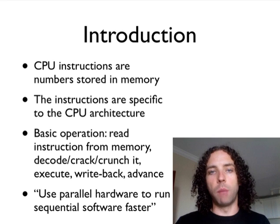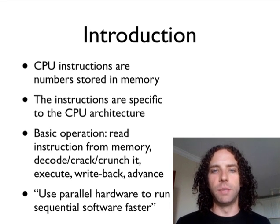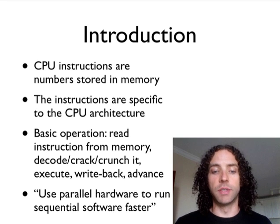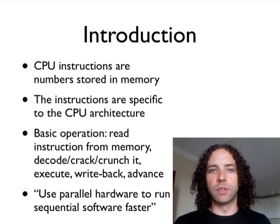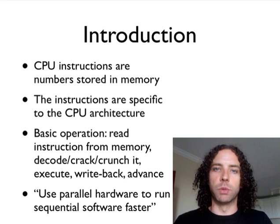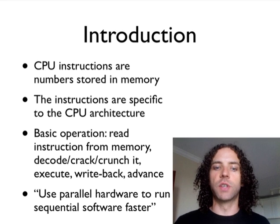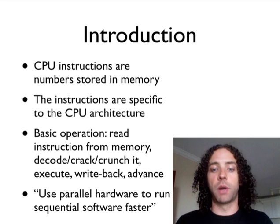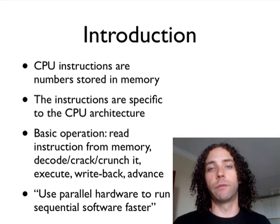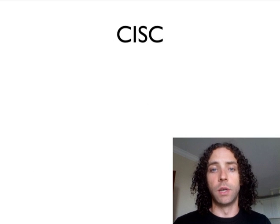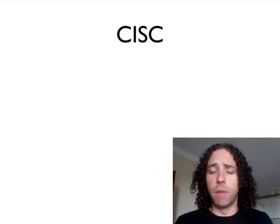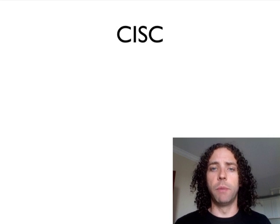The fundamental problem of CPU architecture and what we're trying to solve is that hardware is a parallel thing. You can always add more transistors to do more things in parallel, but software is actually written sequentially — it says do one thing, then do another. So the fundamental problem is: how do we use parallel hardware to run sequential software faster? This is something we've had many different approaches to, and they've evolved over time.